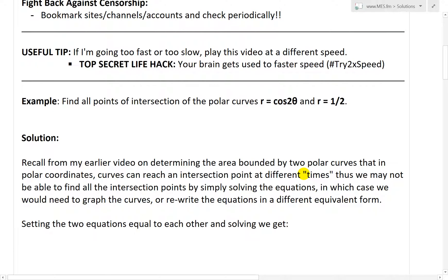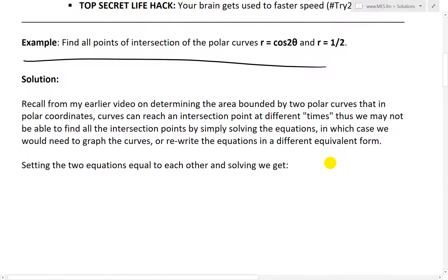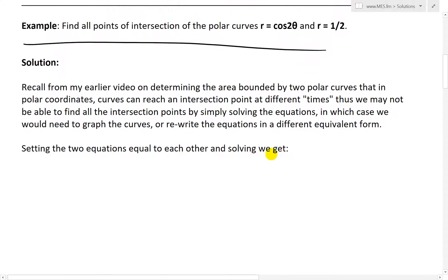Let's look at the solution. Recall from my earlier video on determining the area bounded by two polar curves that in polar coordinates, curves can reach an intersection point at different 'times.' So make sure to watch that earlier video. Thus, we may not be able to find all the intersection points by simply solving the equations — in which case we would need to graph the curves or rewrite the equations in a different equivalent form, as I'll show in this video.